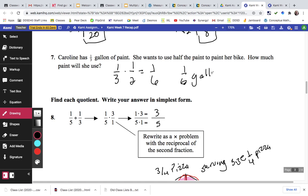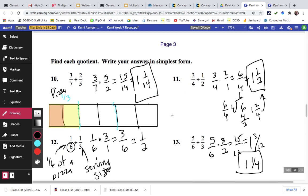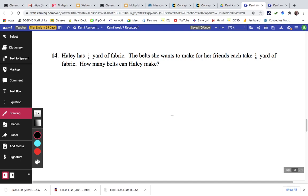Continuing to scroll down, there's another word problem. Haley has 3/4 of a yard of fabric. We talked in class about how it was important to draw a picture, so here's a picture of her 3/4 of a yard of fabric. That got me thinking, maybe I should draw a picture of a yard of fabric so we can really see that 3/4.